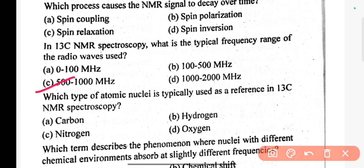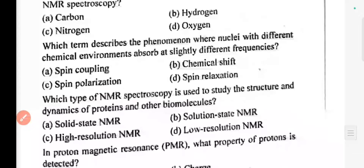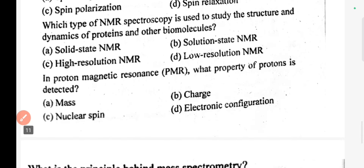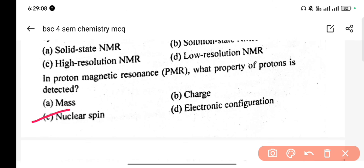In 13C NMR spectroscopy, what is the typical frequency range of the radio waves used? The correct answer is C. Which type of atomic nucleus is typically used as a reference in 13C NMR spectroscopy? The correct answer is carbon. Which term describes the phenomenon where nuclei in different chemical environments absorb at slightly different frequencies? The correct answer is A: chemical shift. Which type of NMR spectroscopy is used to study the structure and dynamics of proteins and other large molecules? The correct answer is A.